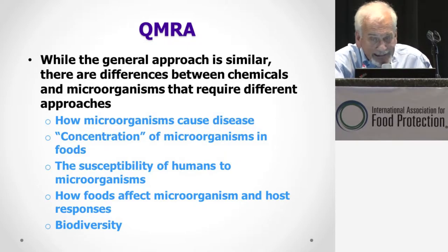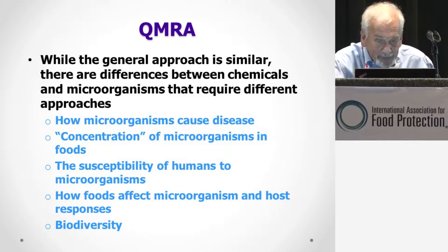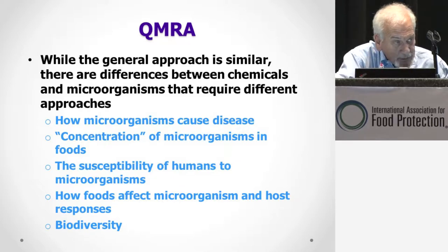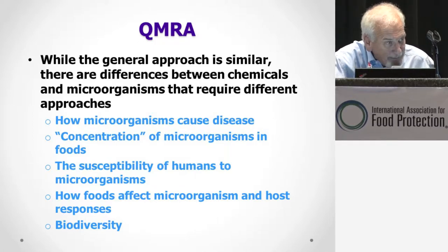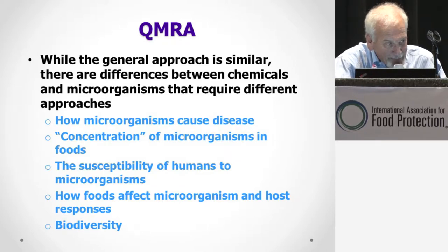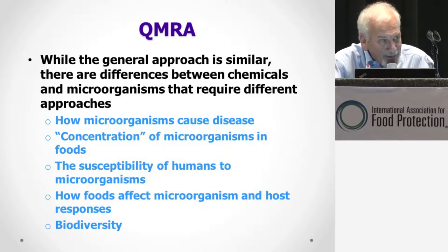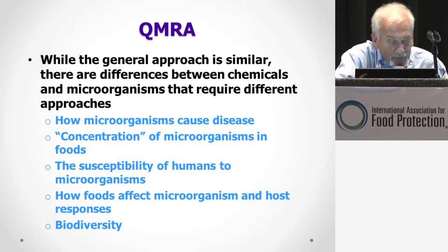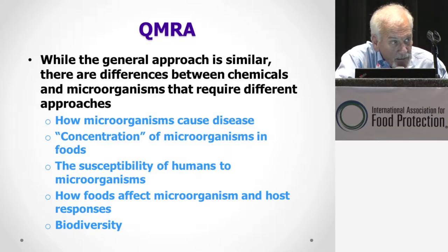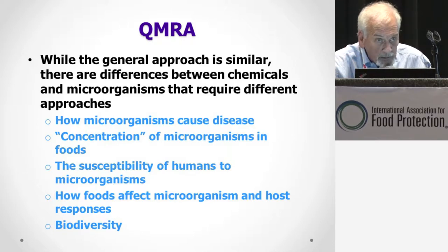The general approach is similar, but I want to highlight some of the differences between chemicals and microorganisms that require different approaches. It's important to understand how microorganisms cause disease. There are issues about estimating the concentration — theoretically you don't have concentrations of microorganisms, you have population densities, but we refer to them as concentrations so we can talk with chemists. We have huge differences in human susceptibility to microorganisms, and the food matrix can affect both the microorganism and the host response.